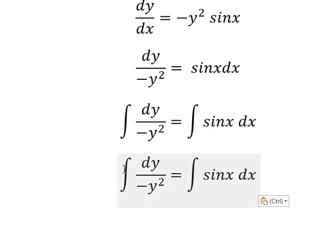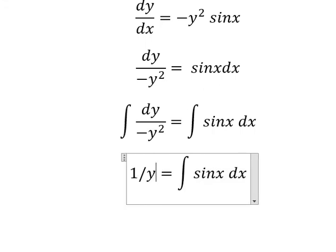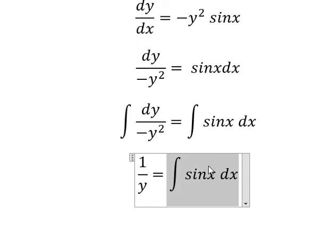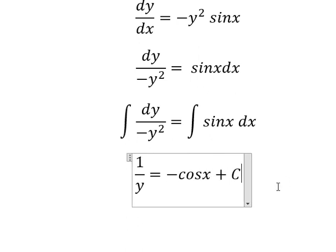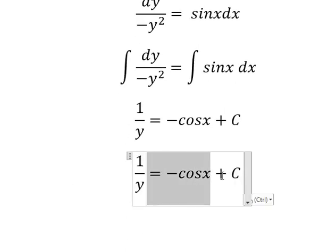So the integration of this one, we have one over y. The integration of that one, we have negative cosine x, and I will put plus C. This one I will put on the left while we put that on the right.